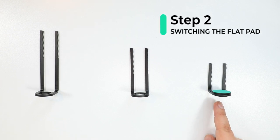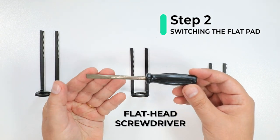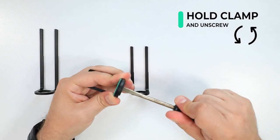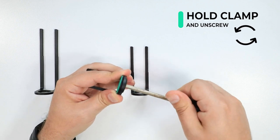Switching the flat grip pad from one clamp to the next is super easy. All you need is a flat head screwdriver. Hold the clamp with your thumb and index finger and unscrew the cap counter clockwise.